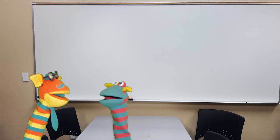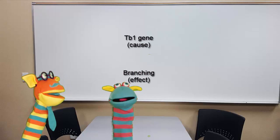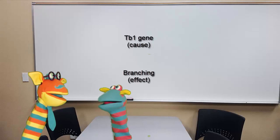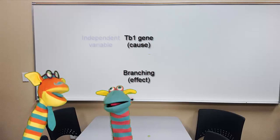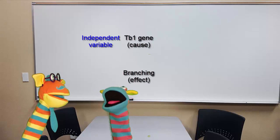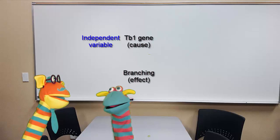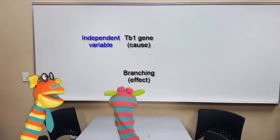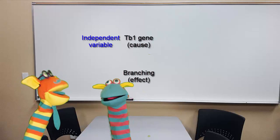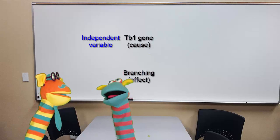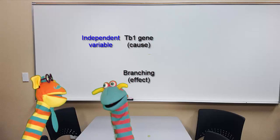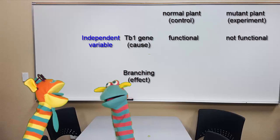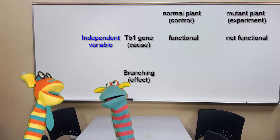In your hypothesis, the potential cause is the TB1 gene, and the potential effect is the degree of branching in plants. To set up the experiment, we need to alter the potential cause first, or the so-called independent variable. The potential cause in my hypothesis is the branching gene — how do I change it? Can I take it away from the plant? You certainly can. There is a TB1 mutant plant where this gene is not functional. I know I always need a control group and an experimental group, so my control group will be the normal plant, and my experimental group will be the mutant plant, right? Exactly.